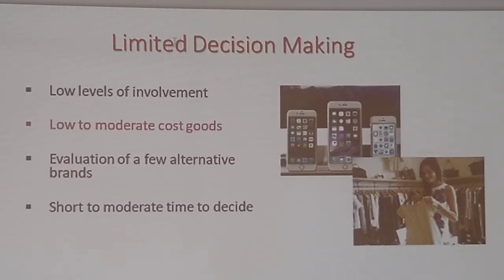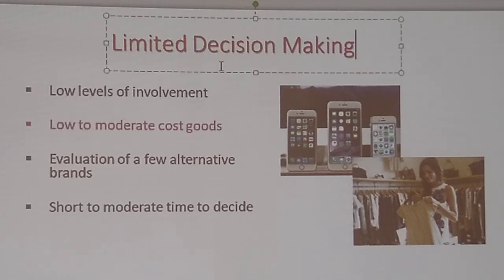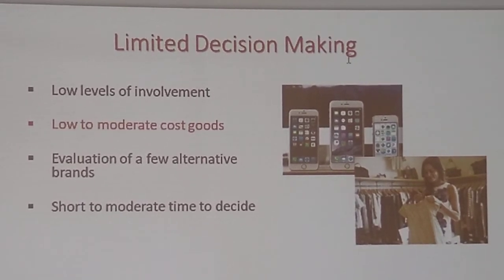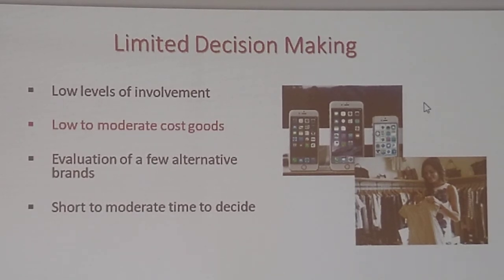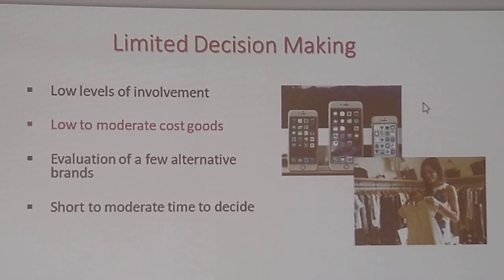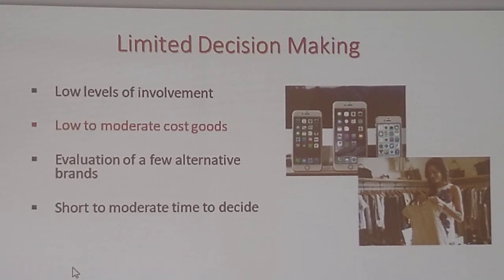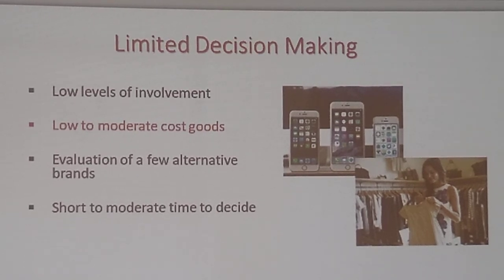Limited decision making involves low levels of involvement — a little bit higher than routine — with low to moderate cost of goods. This might be like clothing. I have cell phones listed here, but I think the cell phone is much higher because cell phones are expensive nowadays — not like they used to be where you could get one for a couple hundred dollars. Evaluation of a few alternative brands, short to moderate time to decide. Things like clothing or maybe some costume jewelry — things that aren't that expensive, but they're not cheap either.